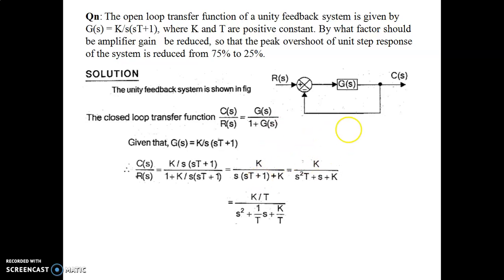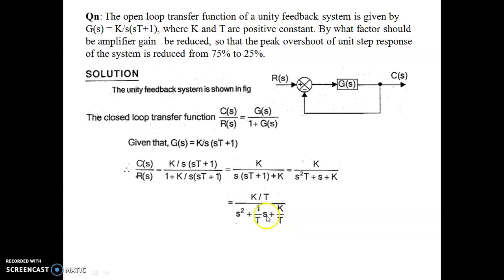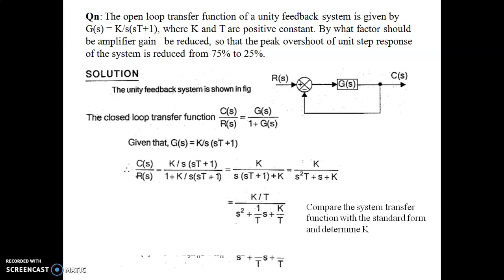We compare this transfer function with the standard second-order system, where the characteristic equation is s² + 2ζωns + ωn². Dividing the denominator by T, we rewrite it as s² + (1/T)s + (K/T), which matches the standard form ωn² / [s² + 2ζωns + ωn²].